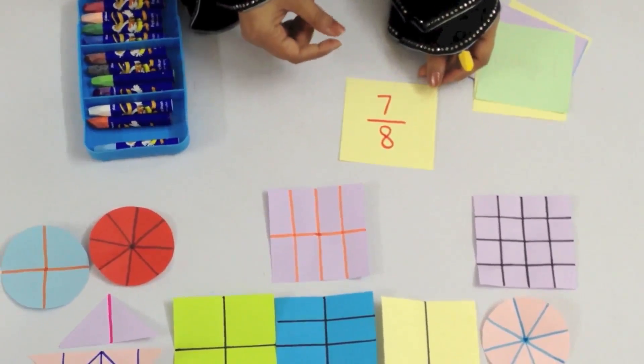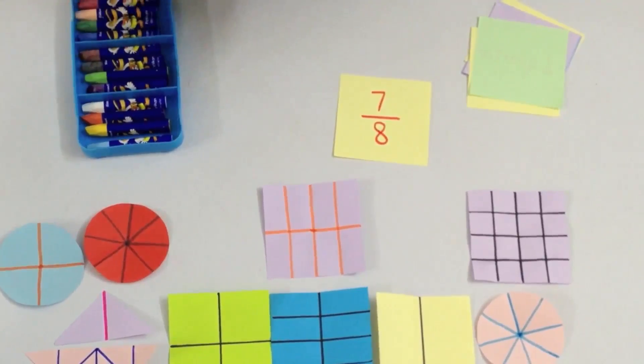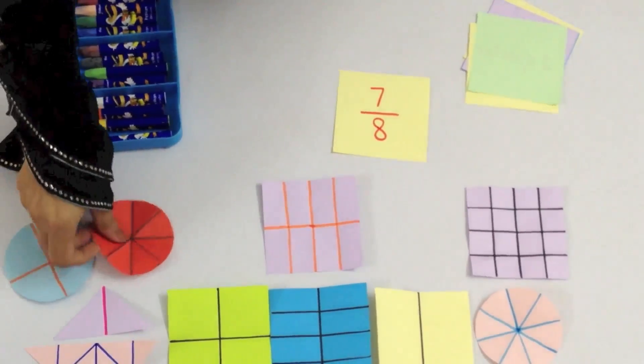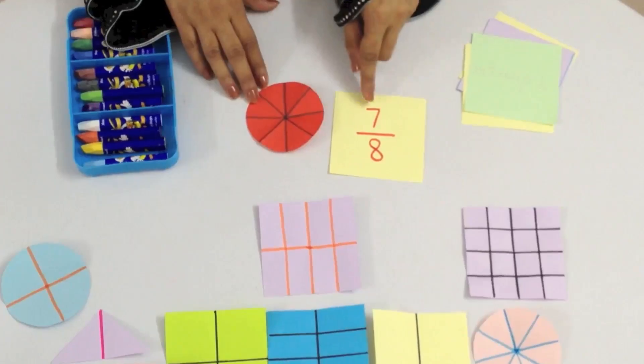Now here this fraction is seven by eight. We are going to pick a shape which has eight equal parts, which is this circle, and then we are going to color any seven parts.